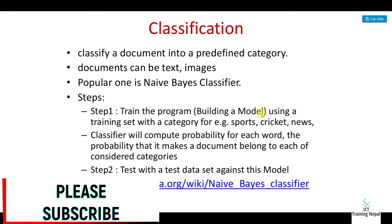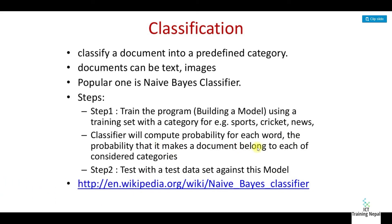A classifier puts a document into predefined categories. Documents can be text or images. A popular one is the Naive Bayes classifier. The classifier computes the probability that a document belongs to each of the considered categories, then tests against the test dataset.